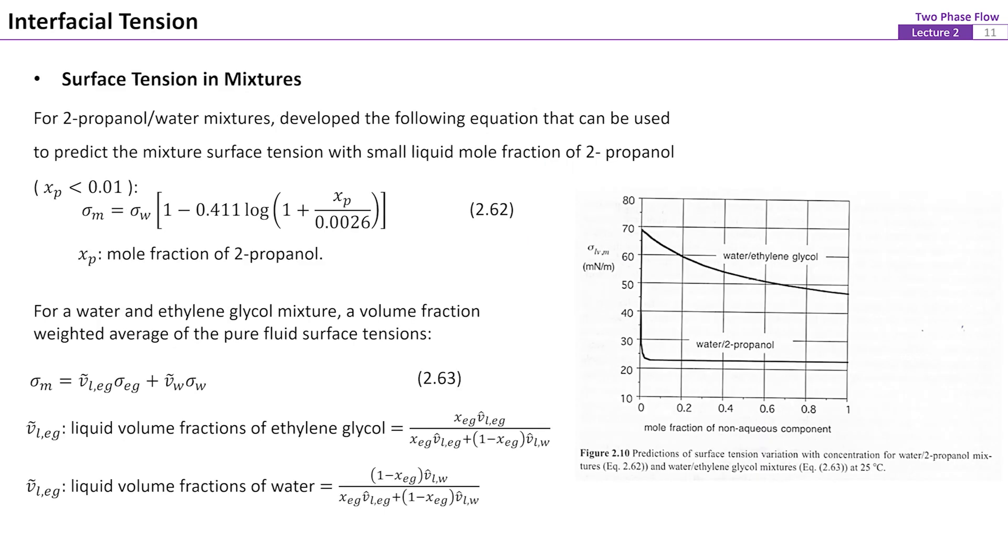For fluid mixtures, the surface tension is also a function of the ratios of components. For example, for isopropanol water mixtures. Equation 62 was developed to predict the mixture surface tension with small liquid mole fraction of isopropanol.